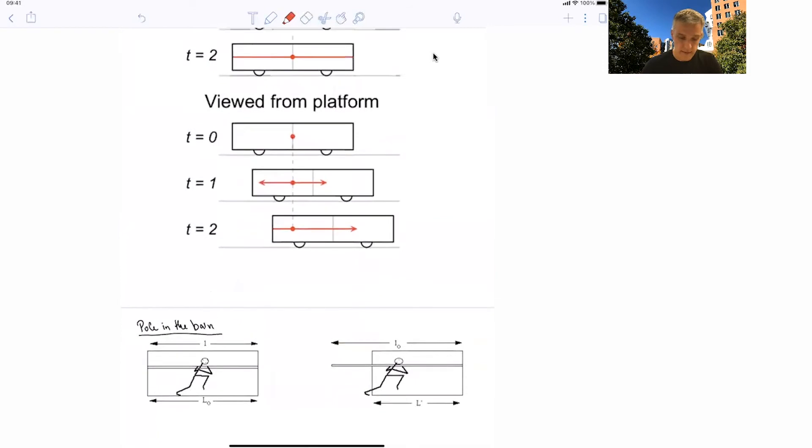And that led us to understand the pole and the barn paradox, where in one example, the event of the front of the pole hitting the back of the barn and the event of the back of the pole hitting the front of the barn, they are simultaneous for the barn owner. But they're not simultaneously happening for the person who's carrying the pole. In this case, the event of hitting the back of the barn corresponds to an event or is simultaneous to an event where the back of the pole is still sticking out of the barn. So there is a clear disagreement. But the disagreement can be resolved by understanding that simultaneous events are not necessarily or are not simultaneous to observers.